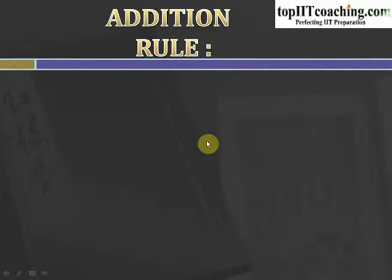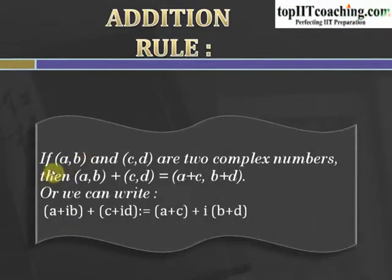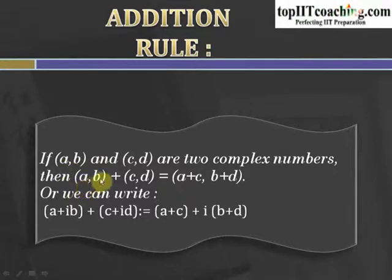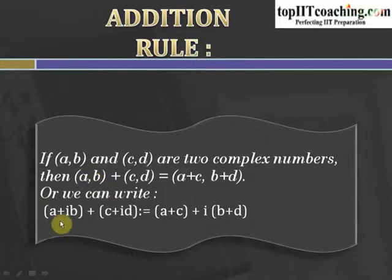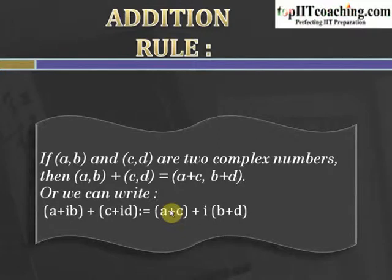Now the addition rule — just like numbers, can we add complex numbers? If (A, B) and (C, D) are two complex numbers, their addition equals the ordered pair (A+C, B+D). The real parts are added and the imaginary parts are added. So (A + iota B) plus (C + iota D) equals (A+C) plus iota times (B+D). This is how we add two complex numbers — add the real parts and add the imaginary parts.